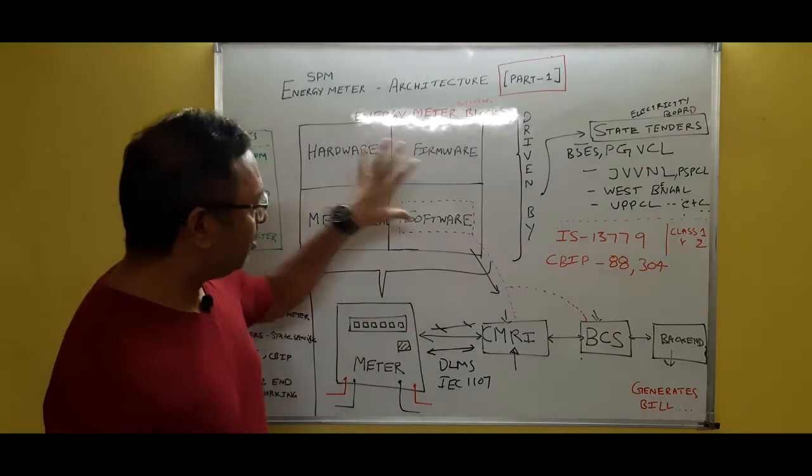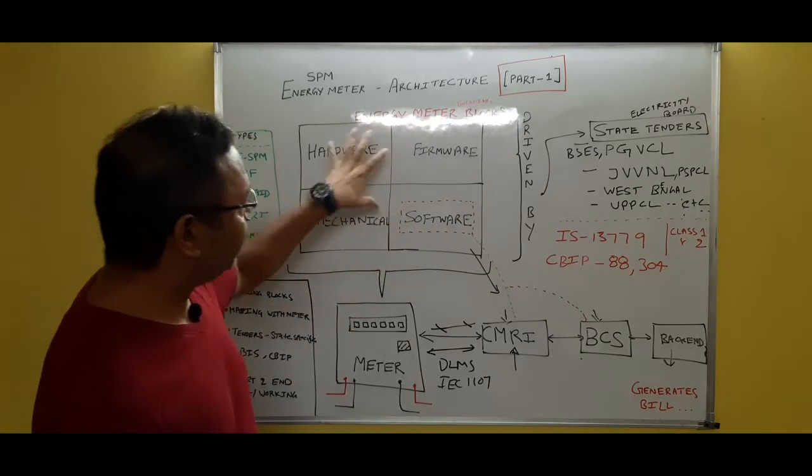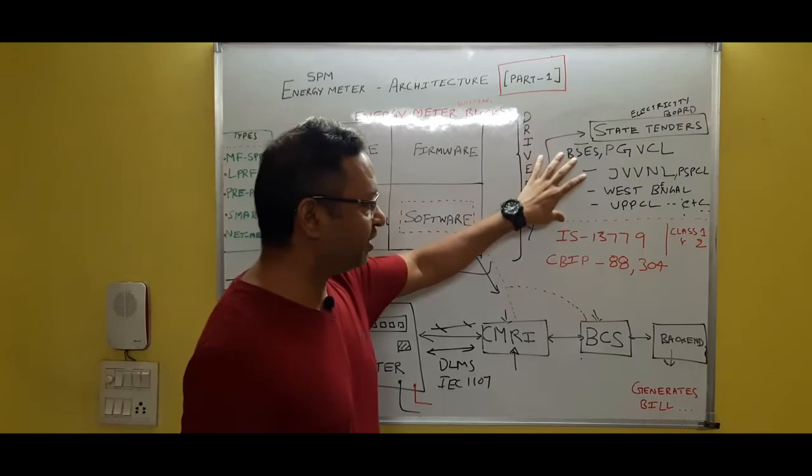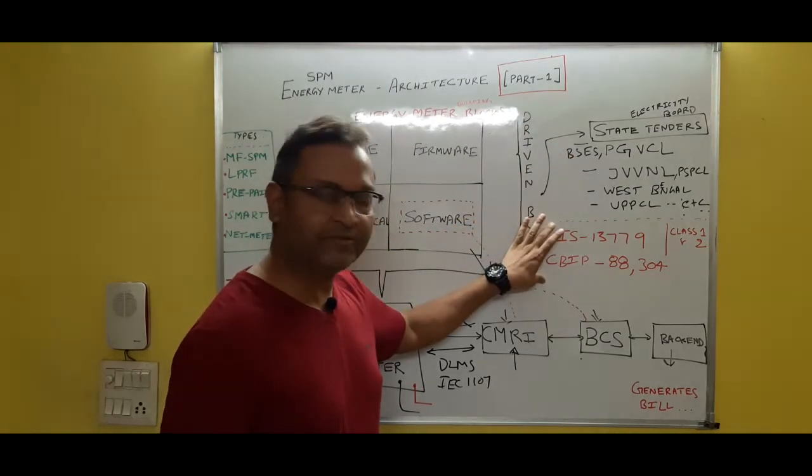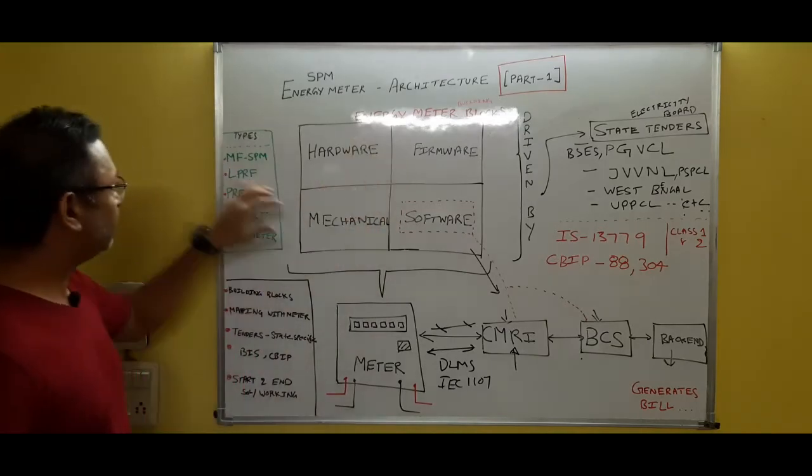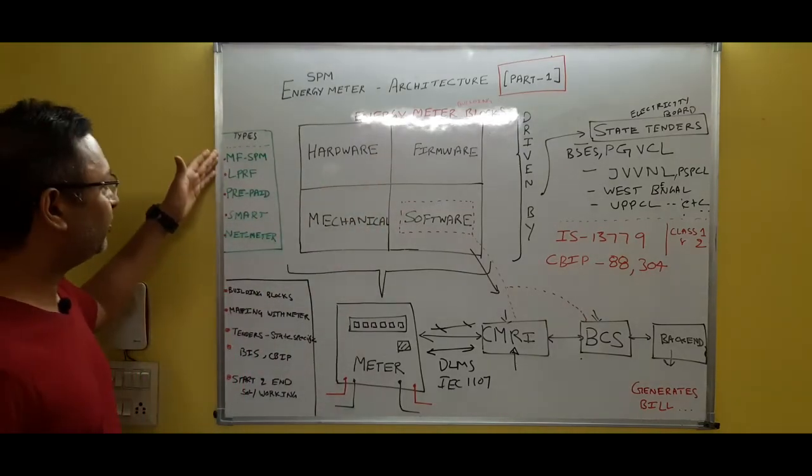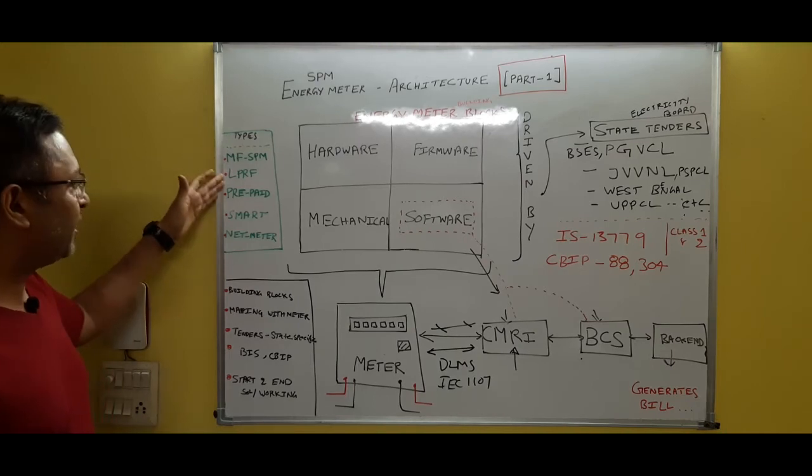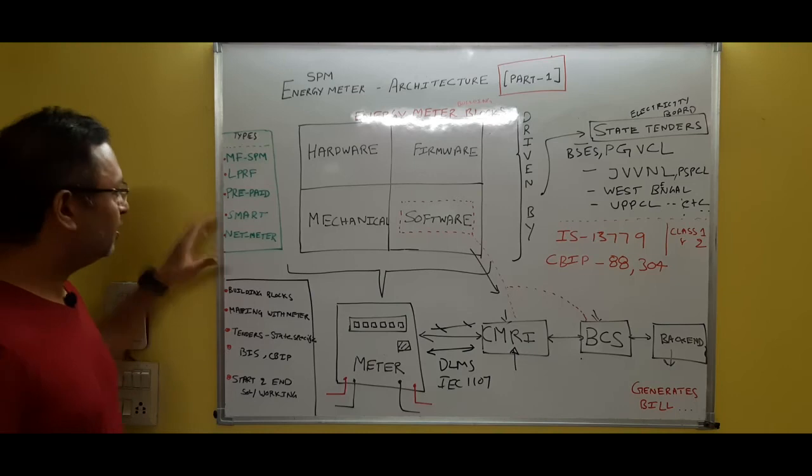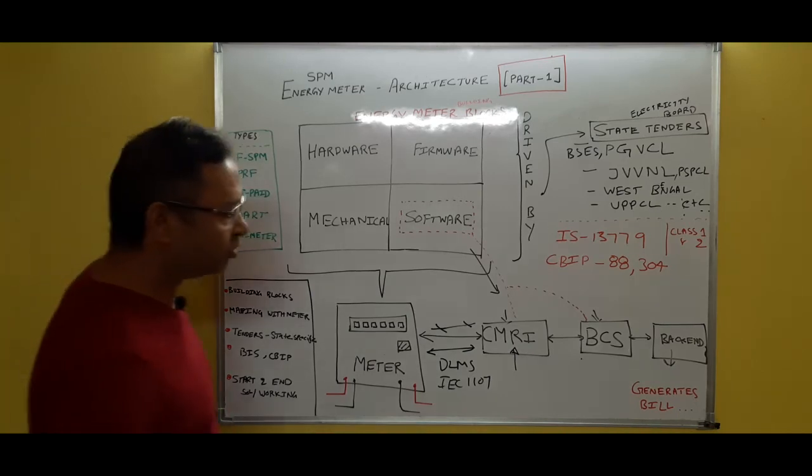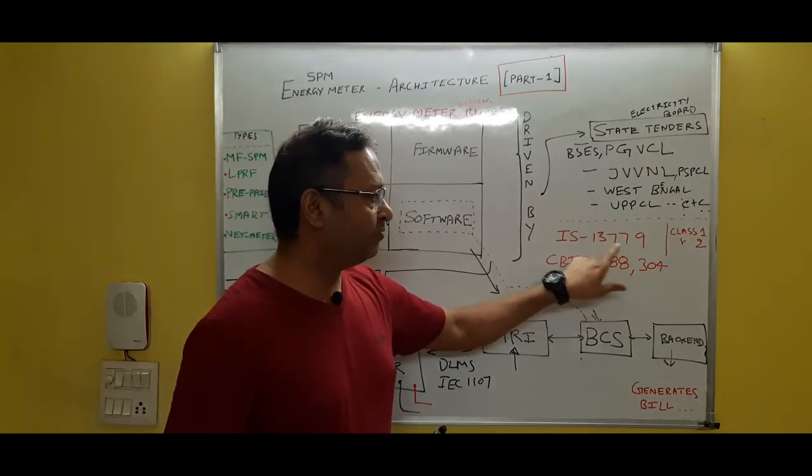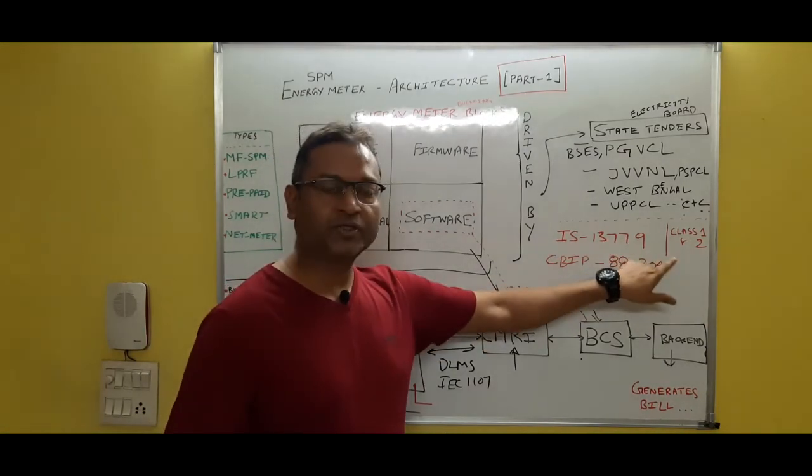So here, overall with this overall picture, the architecture details of meter are driven by the tender specifications along with these core specifications. And in the single phase meter, these particular types come: one is the multi-functional single phase meter, LPRF meter, prepaid meter, smart meter, or net meter, etc. So all these specifications of course particularly follow this IS 13779 standard which is defined for class 1 and class 2.